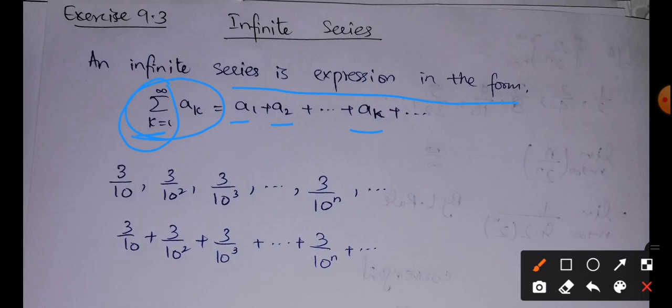Here we have an example. We have a geometric sequence: 3/10, 3/10 squared, 3/10 cubed, and so on. By just adding these terms we get an infinite series in this form.